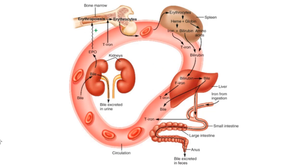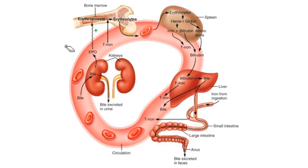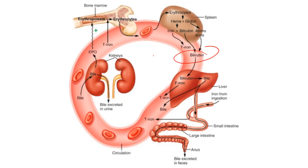The life cycle of a red blood cell begins in the bone marrow. The red blood cell has no nucleus and survives only 120 days. The spleen is the primary organ that removes worn-out red blood cells from circulation. Bilirubin from broken-down red blood cells is removed primarily by the liver, with the kidneys also playing a role.